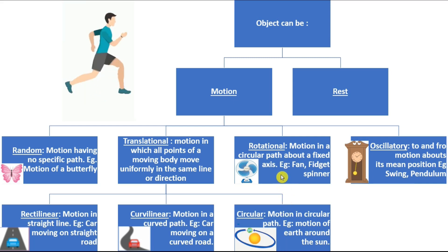Then we come to the rotational motion. Rotational motion is motion in a circular path about a fixed axis. You must have seen a fan. It is rotating at one place only. The whole body is moving but at different speeds. The example of rotational motion is fan or a fidget spinner.